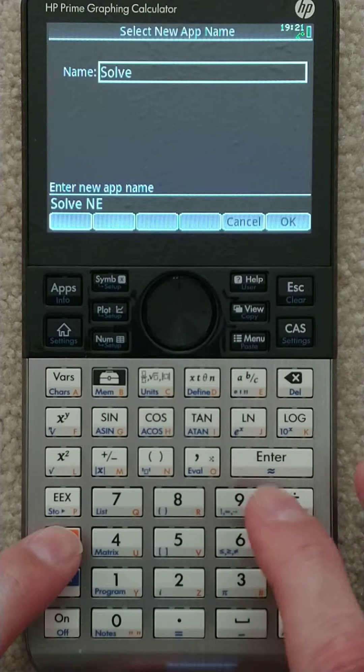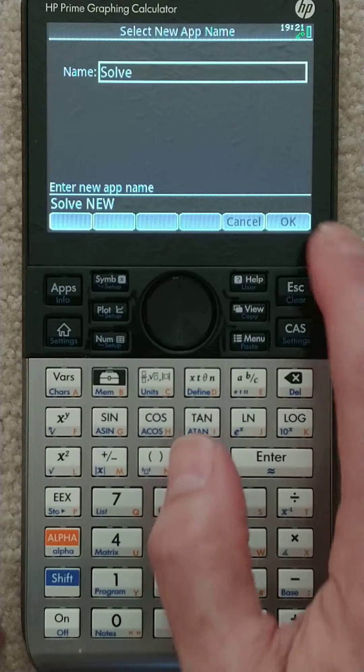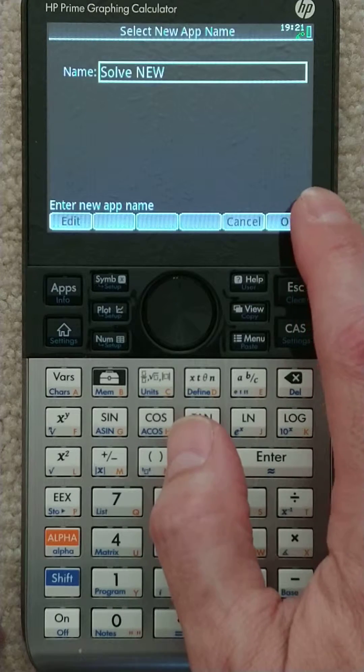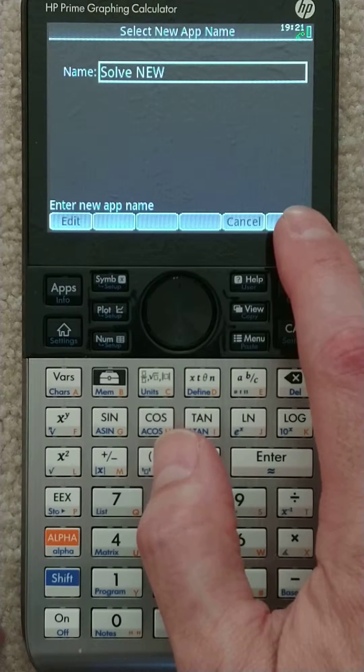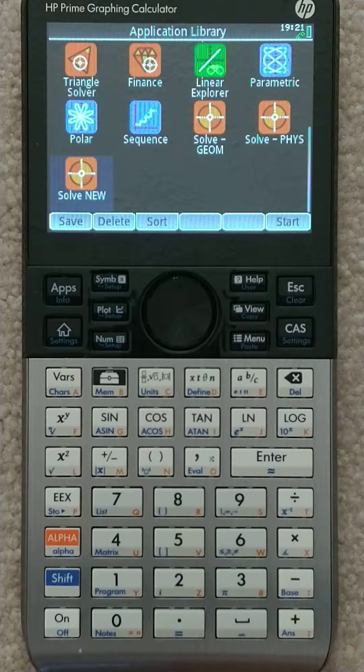It's kind of hard, the way I'm filming this, to see all the letters. All right, so let's just say I called it that. Hit okay. Okay. All right, so now that appears in the apps menu at the very bottom.